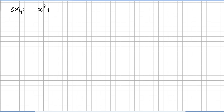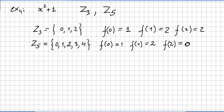Another example: we take x squared plus 1, and let us check if it is reducible or irreducible over Z₃ and over Z₅. There are many ways to check this, but let us start with Z₅ — it is easier somehow.